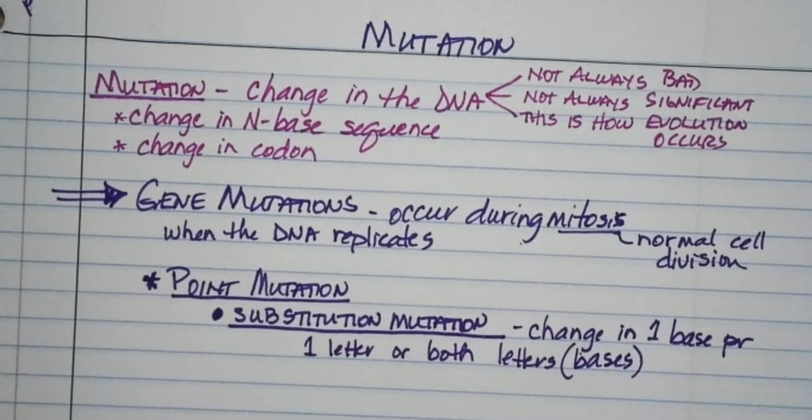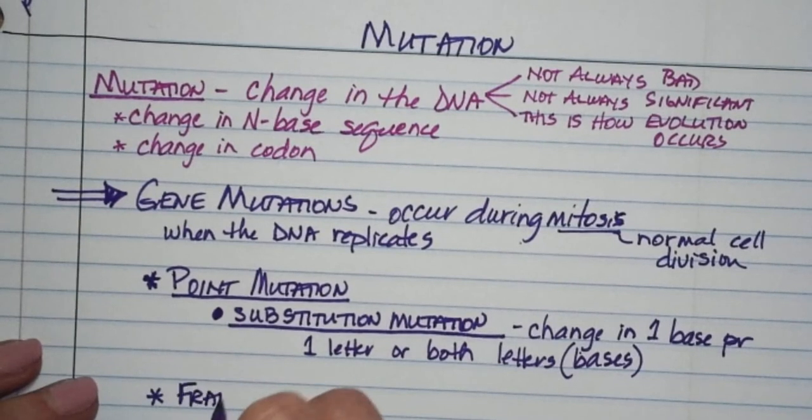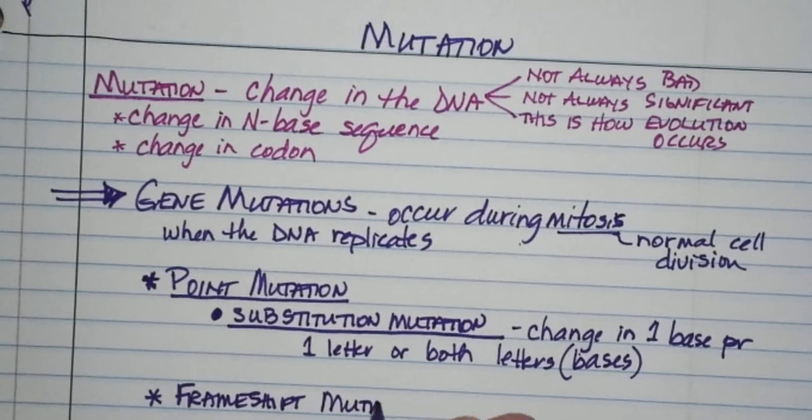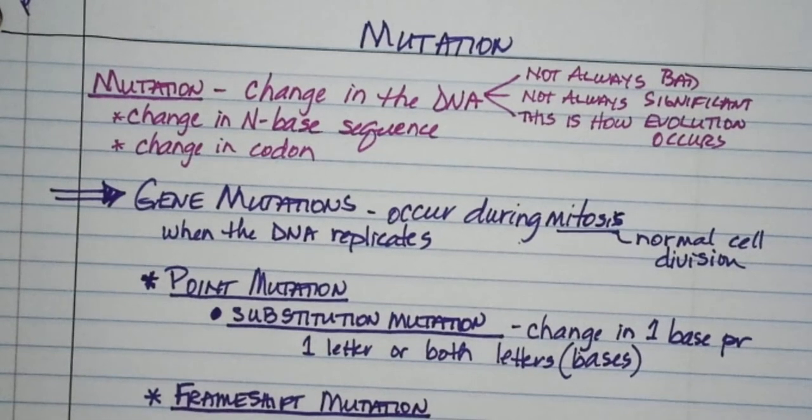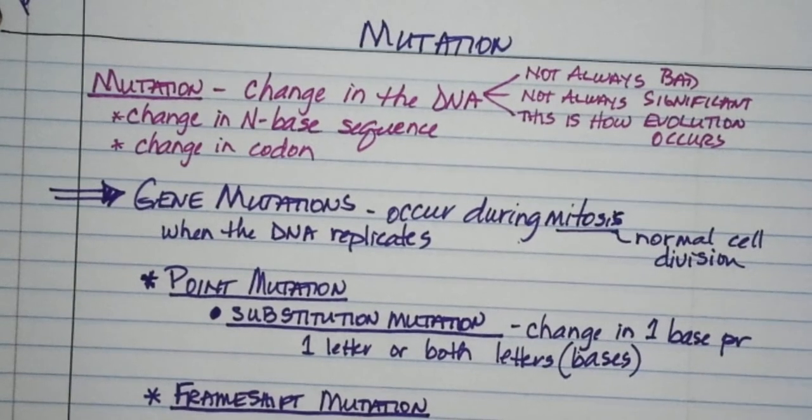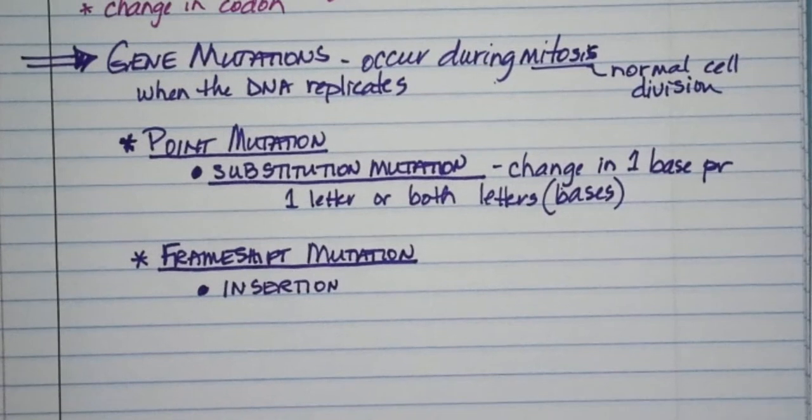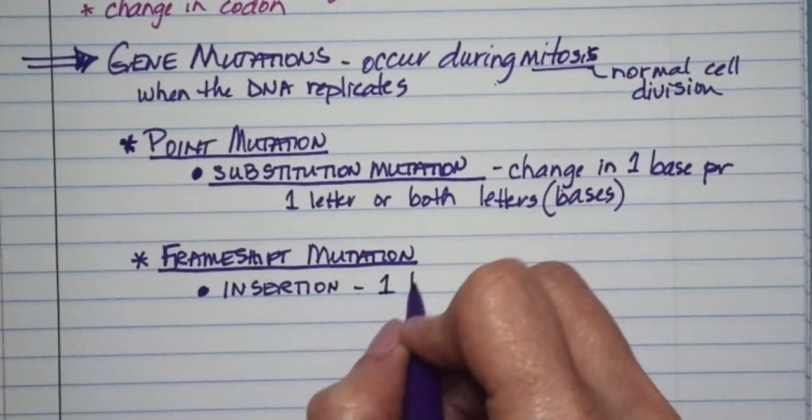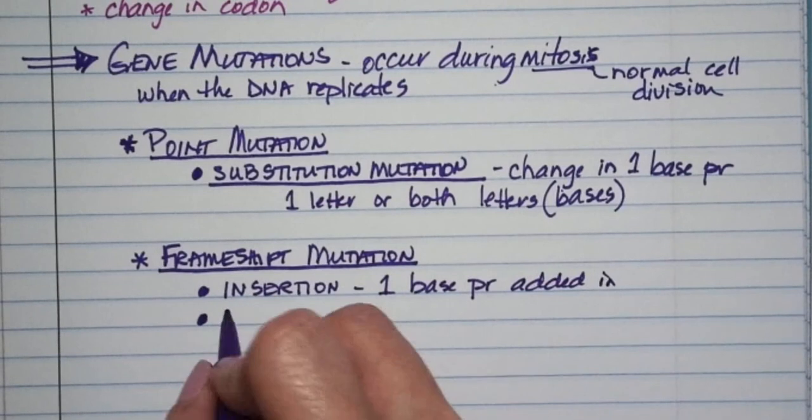The other type of mutation is called a frame shift mutation. It shifts the whole framework of what's going on. There are two types of frame shift mutations. One is an insertion, which means that you've got this long line of letters and an extra one's added. One base pair's added in. And the other one is deletion. One base pair taken out.